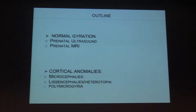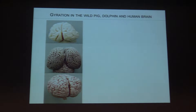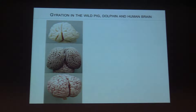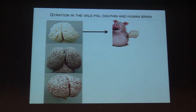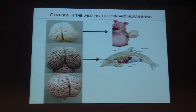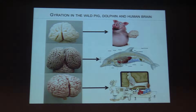We are going to present normal gyration. What is the difference between these three brains? You can see that the aspect of the foliation is completely different. The first one is the brain of a pig, the second one of a dolphin, and the third one is the human fetal brain — you can see that this brain seems better than the others.